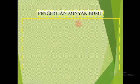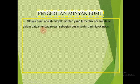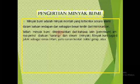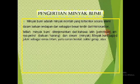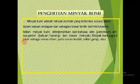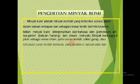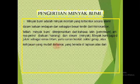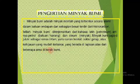Pengertian minyak bumi: minyak bumi adalah minyak mentah yang terbentuk secara alami dalam batuan dan endapan, dan sebagian besar terdiri dari hidrokarbon. Istilah minyak bumi diterjemahkan dari bahasa Latin, petroleum — 'petra' artinya batuan atau karang, dan 'oleum' artinya minyak. Minyak bumi juga dijuluki sebagai emas hitam, yaitu cairan kental coklat atau gelap kehijauan yang mudah terbakar, yang berada di lapisan atas dari beberapa area di kerak bumi.